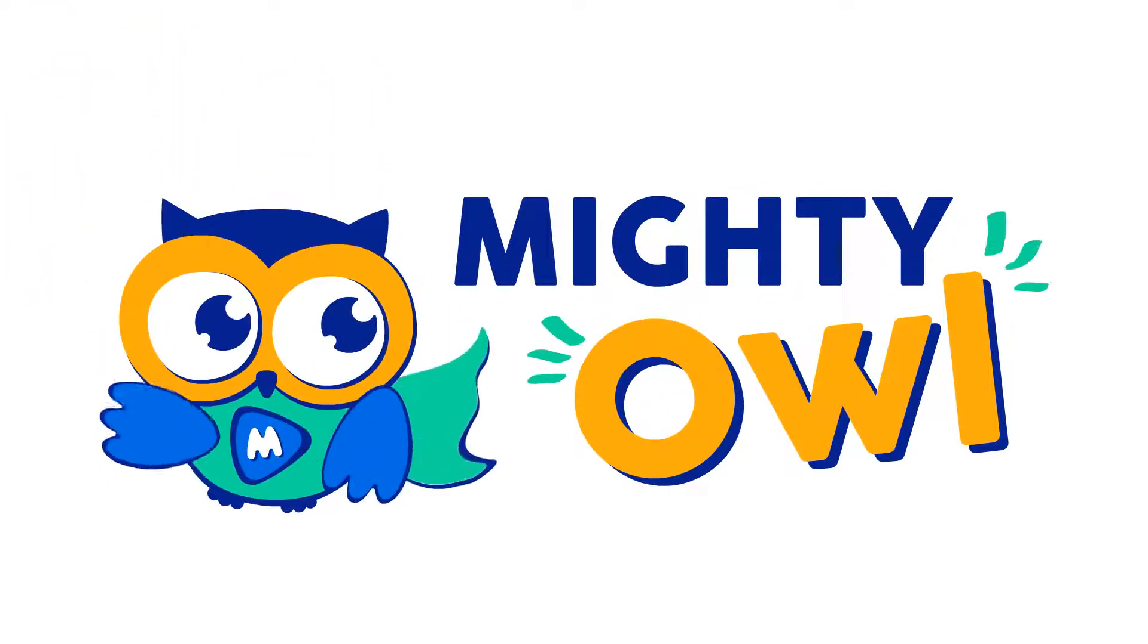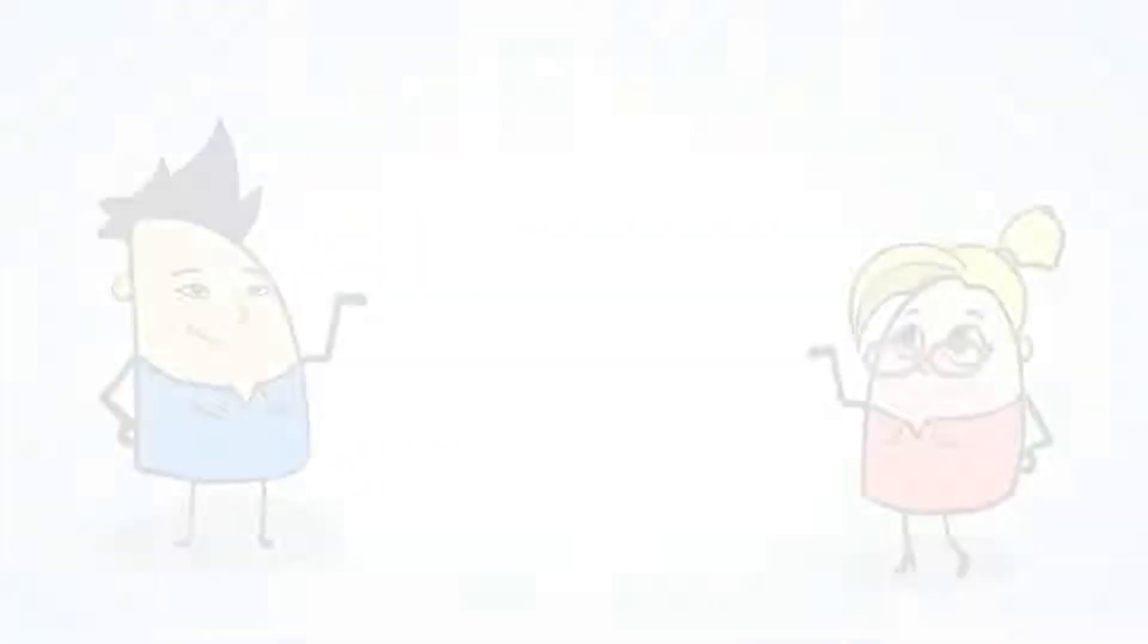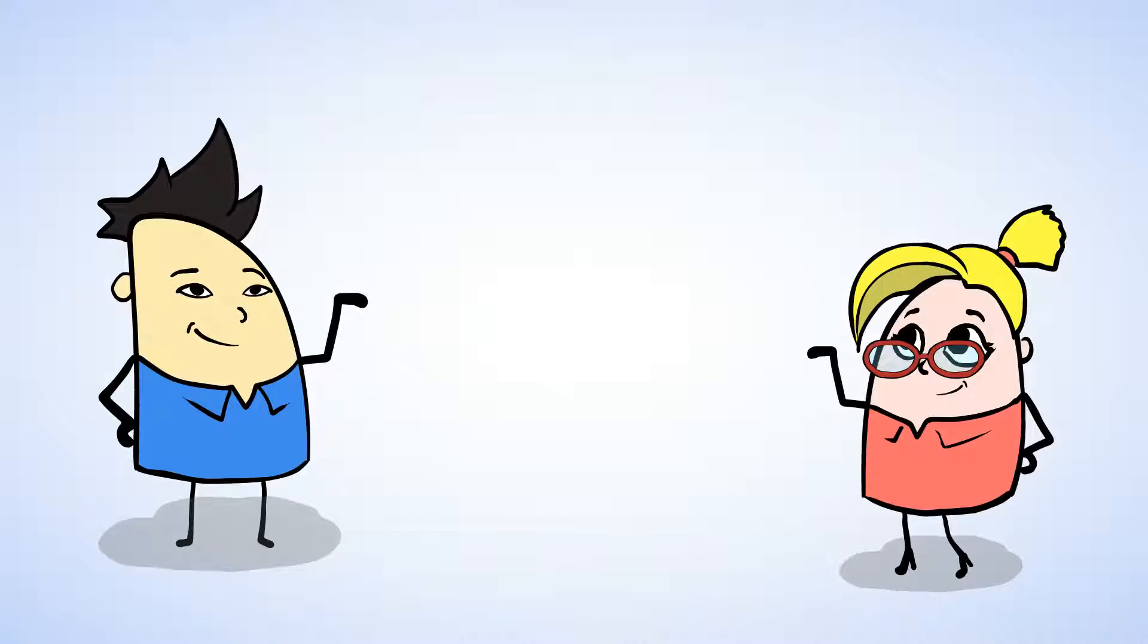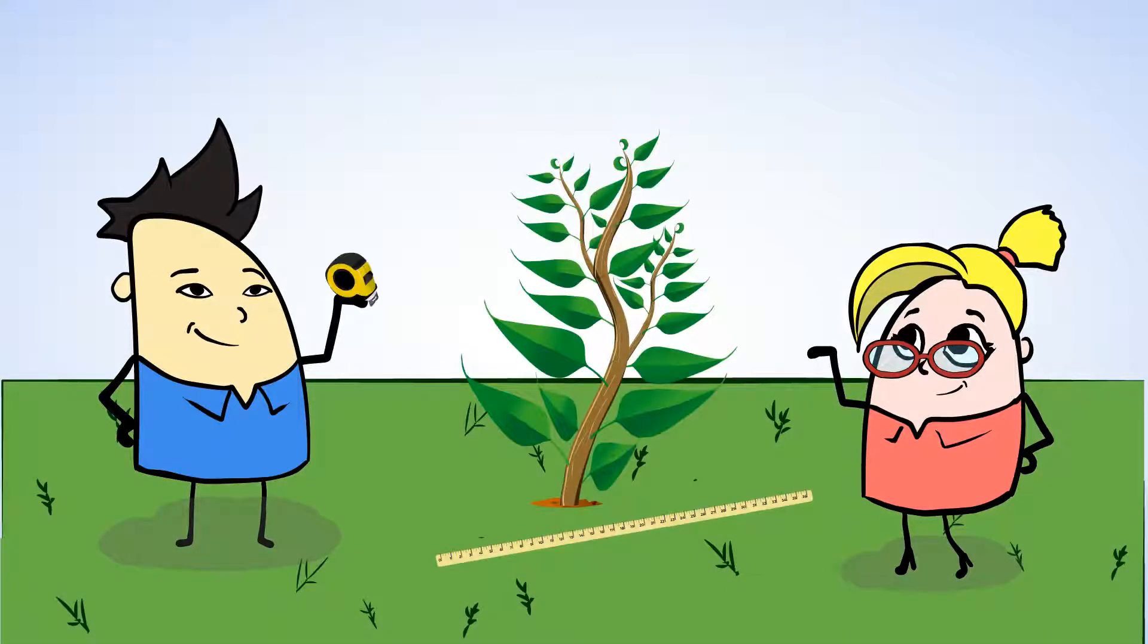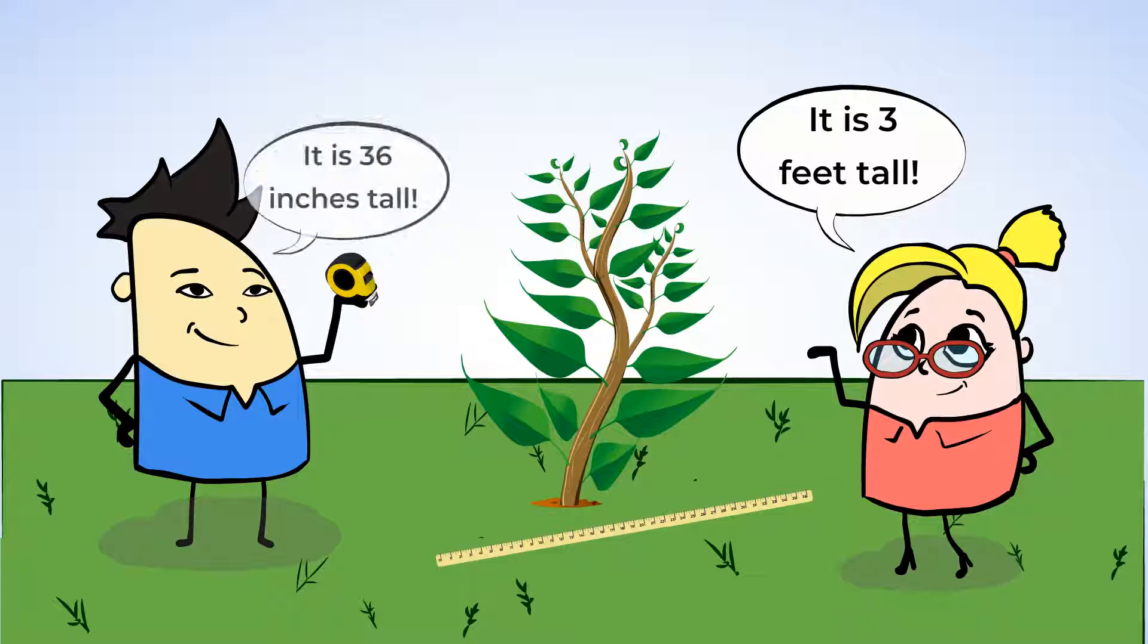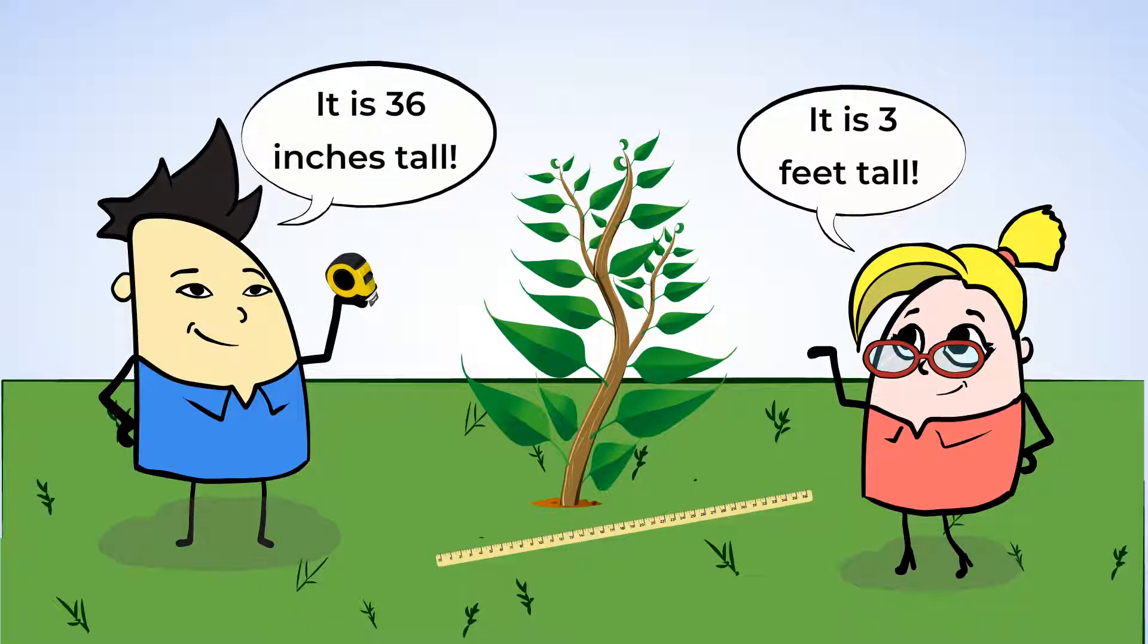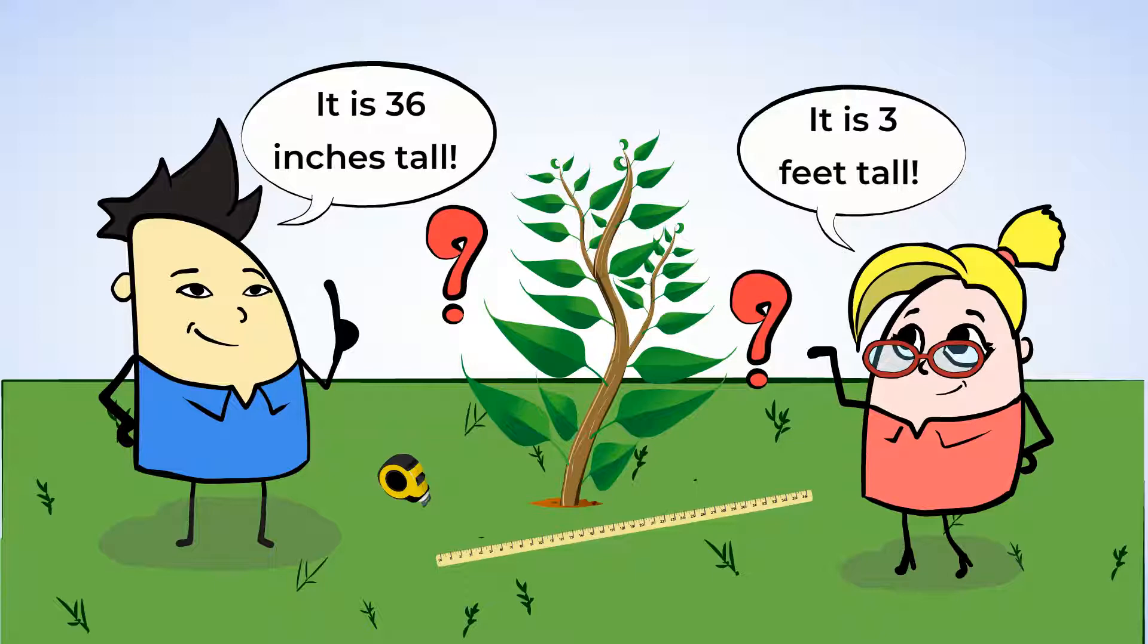Hello, this is Mighty Owl. Meet my friends Jenny and Chen. They're out in the yard, measuring a little tree that they planted together. Jenny says that the little tree is three feet tall. Chen says that the little tree is 36 inches tall. And each of them is so sure that they are right and the other is wrong. But maybe, just maybe, it's possible that they're actually both right. Can that be true?